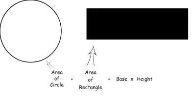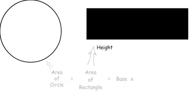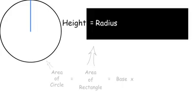So the area of the circle is equal to the area of the rectangle, which is equal to base times height. The height of the rectangle, as you can see, is the same as the radius. So height equals radius.